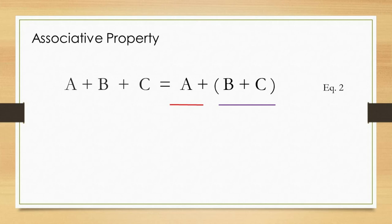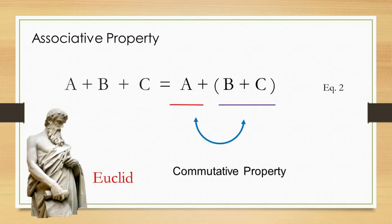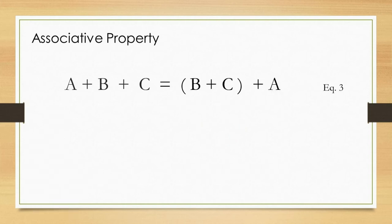Now, let us focus on the right arm of the equation. Here, the positions of the term A and the bracketed terms are interchangeable. The interchanging is possible due to the commutative property in addition, which the proof had been provided by Euclid. You can access that by clicking the link in the monitor or in the description below. The interchanging gives us equation 3, as shown in this slide.